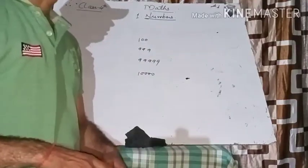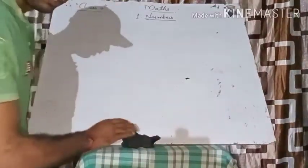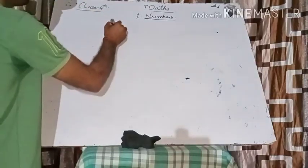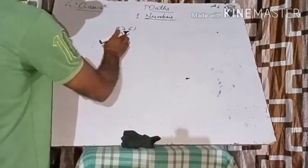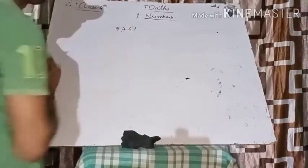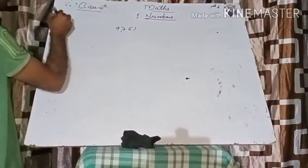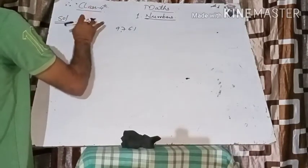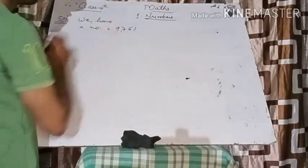Now let's move to expanded form. What is the expanded form? Let's take the number 9761. Here 1 stands for ones, 6 for tens, 7 for hundreds, and 9 for thousands, so 9761 means nine thousand seven hundred sixty-one.